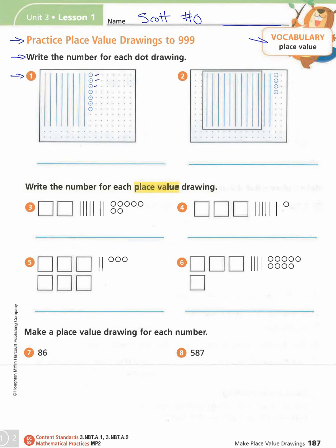They've circled 1, 2, 3, 4, 5, 6, 7 — seven single dots. And then over here they covered over 10 dots with a line. Let's count how many tens that is: 10, 20, 30, 40, 50, 60, 70, 80 — so they covered 8 tens, which is 80. We write that as 87.